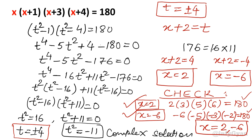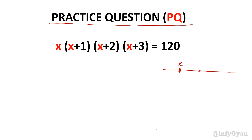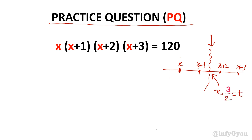Only the real solutions can be calculated here. Now the practice problem: x(x+1)(x+2)(x+3) = 120. You might think 0, 1, 2, 3 — no term is missing. So for substitution, consider the midpoint of 1 and 2, that is x + 3/2. The rest you will solve using the same logic. I hope you liked this video. Thank you so much for watching — please do subscribe.